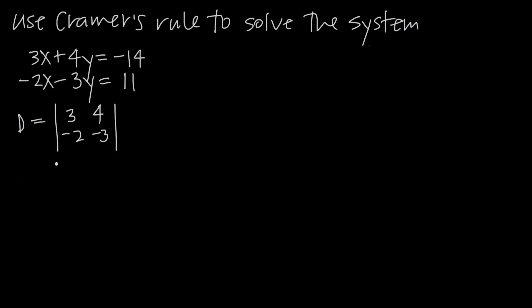This is the coefficient matrix, and we want to find its determinant. Remember that for a 2×2 matrix, you take the upper-left value and multiply it by the lower-right value: 3 times negative 3 gives us negative 9. Then we subtract the product of the lower-left and upper-right: negative 2 times 4 is negative 8, so we have minus a negative 8, which becomes plus 8. So negative 9 plus 8 gives us negative 1.